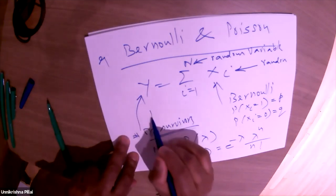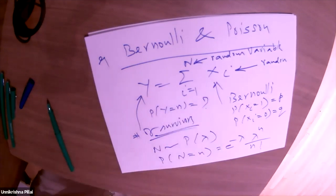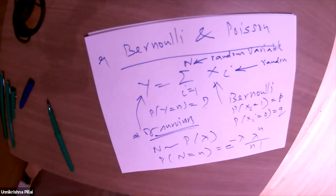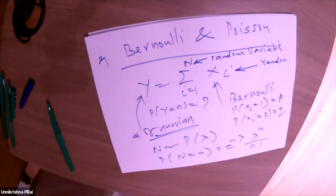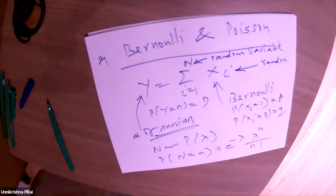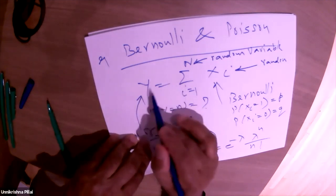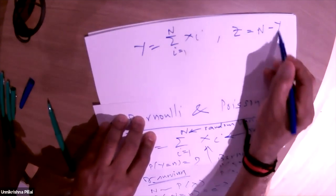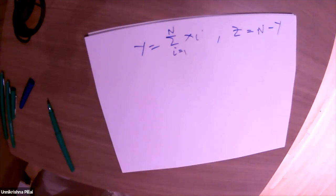After simplification, the (n+m)! cancels with the binomial coefficient denominator, and we can factor the result into two separate Poisson terms: one with parameter pλ and one with parameter qλ. This means Y and Z are independent, and both are Poisson — Y ~ Poisson(pλ), Z ~ Poisson(qλ).